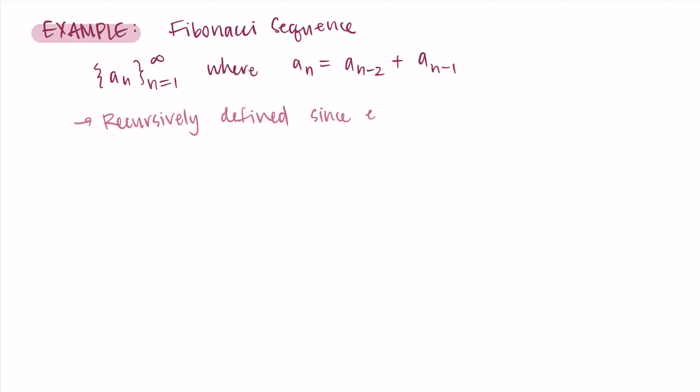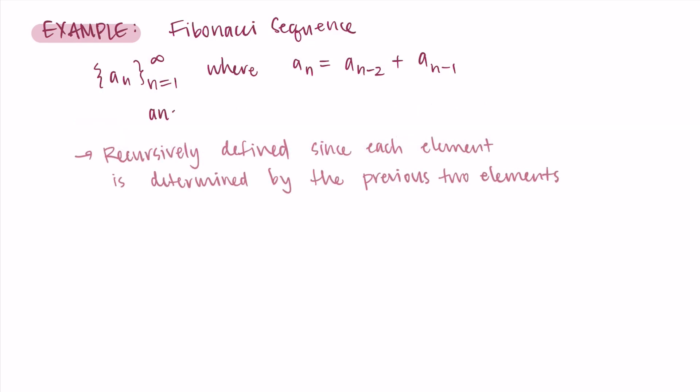This is just an introduction to sequences and series, but I wanted to show you one example that we see a lot of the time and go through how it works. This is the Fibonacci sequence. There are other ways to write it, but this is the way I'm going to write it here today. We're going to do the sequence a sub n, where n starts at 1 and goes to infinity. We're going to define a sub n as a n minus 2 plus a n minus 1. To interpret this, it's the sum of the previous two elements. So each new element is the sum of the ones that came before it, a sub n minus 1 and a sub n minus 2, the previous two. This is a recursively defined sequence since each element is determined by the previous two elements. It depends on the elements that came before it, which then depend on the elements that came before it, etc.